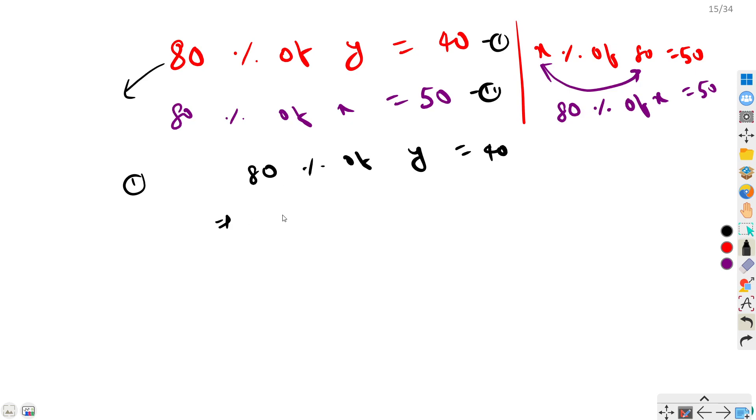Can I say that 80 percent is 4 by 5, or 80 by 100, which is nothing but 4 by 5? You should remember these fractions. 4 by 5 times y equal to 40, so 4y equals 200, therefore y equal to 50.